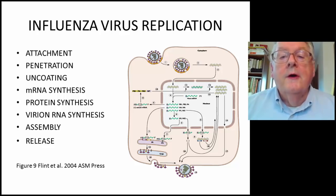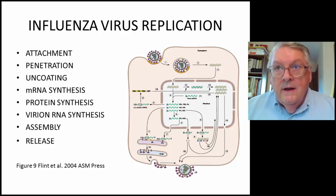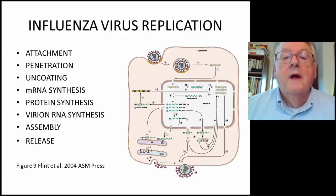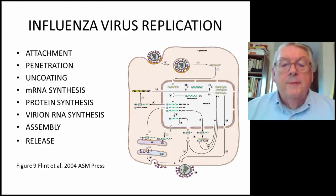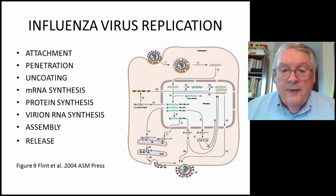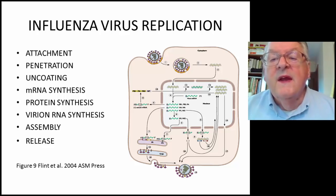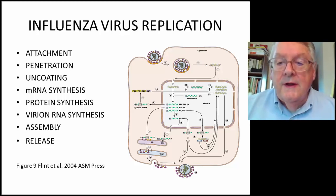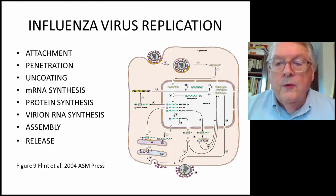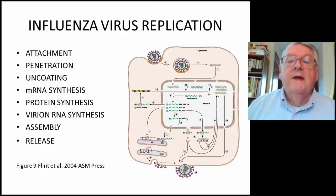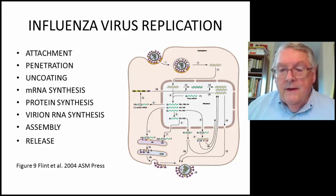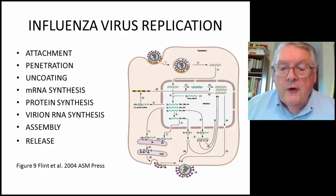The messenger RNAs for the HA and the neuraminidase associate with ribosomes and rough endoplasmic reticulum, where they become glycosylated and exported to the plasma membrane. The other messenger RNAs are made into proteins, and those proteins go back into the nucleus to form new nucleocapsids. In this way, the virus replicates itself, and many viruses are made.